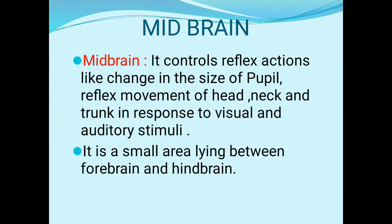The next part of the brain is the midbrain. Midbrain is a small area which lies between the forebrain and the hindbrain. Midbrain regulates reflex actions — specifically cerebral reflexes, which are controlled by the brain, as opposed to spinal reflexes controlled by the spinal cord. For example, the change in the size of the pupil — when you go into bright sunshine, the pupil shrinks — is regulated by the midbrain. Reflex movements of the head, neck, and trunk in response to visual and auditory stimuli are also regulated by the midbrain.